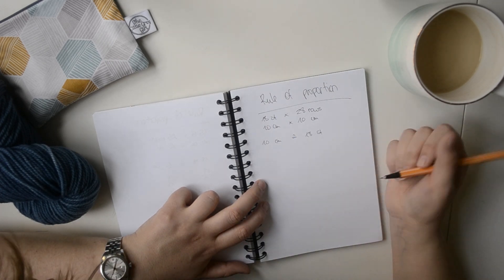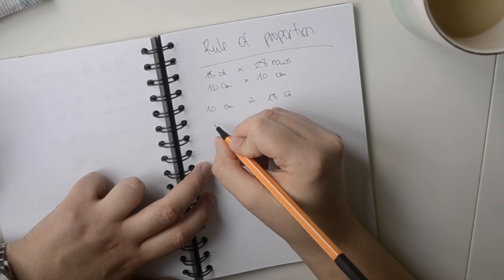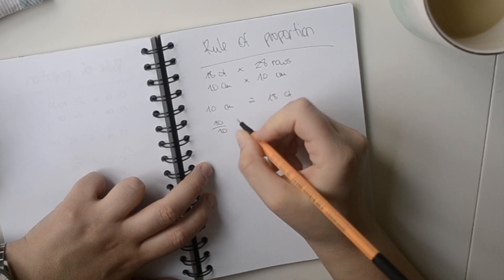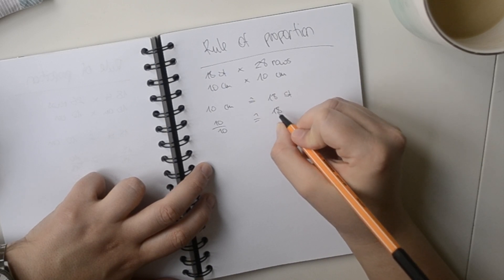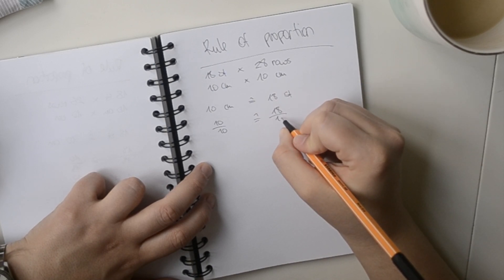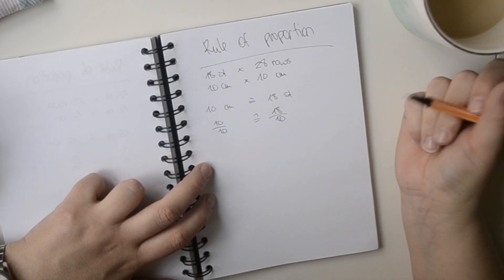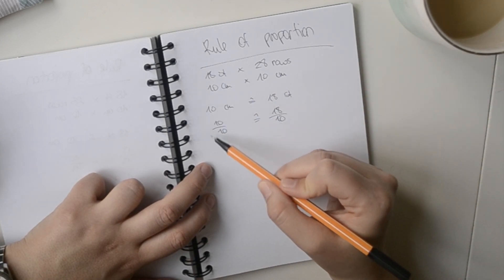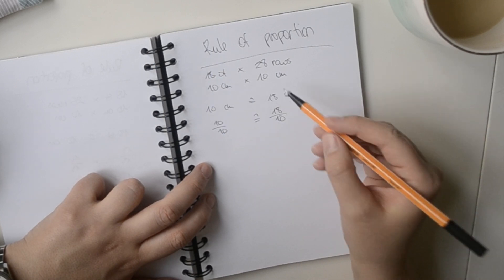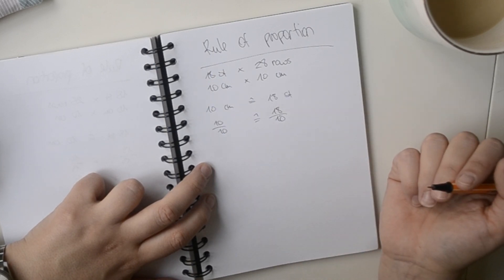So we can go here for 1 cm, and that would be 10 cm divided by 10 is equal to 18 stitches divided by 10. And here you see what I did. If I am to divide by 10 on the one side, then I have to divide by 10 on the other side as well.